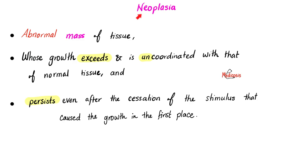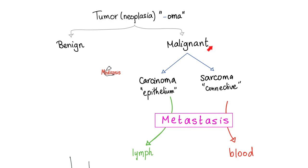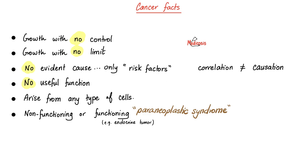Neoplasia is an abnormal mass. Cancer is a mass whose growth exceeds and is uncoordinated with that of normal tissue, and persists even after cessation of the original stimulus. Tumors could be benign or malignant. The malignant ones could be carcinoma, if they are cancers of the epithelium, or sarcomas, if they are cancers of connective tissue. Carcinomas metastasize to lymph, while sarcomas love to metastasize through the blood. Cancer is growth with no control, no limit, no evident cause — that's why we say risk factors, not causes, because correlation is not the same as causation.